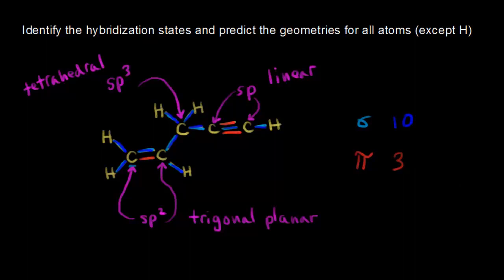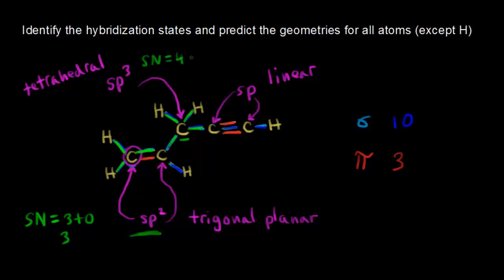You can also find hybridization states using steric number. Let's go back to this carbon and find its hybridization state using steric number. Steric number is equal to the number of sigma bonds plus lone pairs of electrons. There are three sigma bonds around that carbon — three plus zero gives a steric number of three. Therefore I need three hybrid orbitals, and sp2 hybridization gives three hybrid orbitals. For the sp3 carbon, it has four sigma bonds and zero lone pairs, giving a steric number of four — so I need four hybrid orbitals, giving four sp3 hybridized orbitals.